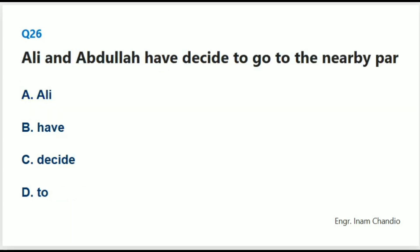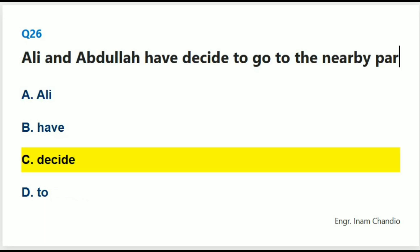Ali and Abdullah have decided to go to the nearby park. The correct answer is C. Decided.